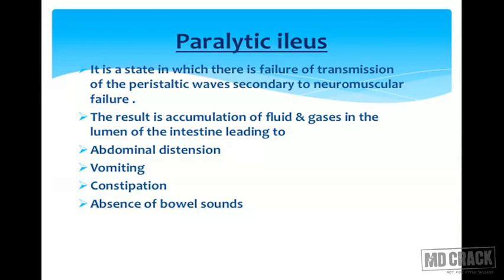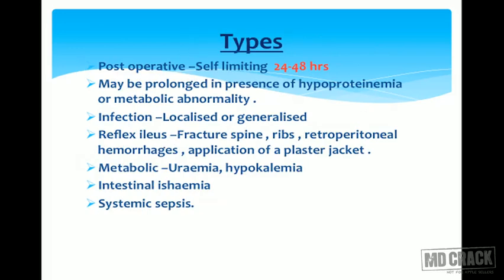Paralytic ileus is the state in which there is failure of transmission of peristaltic waves secondary to neuromuscular failure. The result is accumulation of fluid and gas in the lumen of the intestine, leading to abdominal distension, vomiting, constipation, and absence of bowel sounds. Types include post-operative, which can be self-limiting from 24 to 48 hours, or prolonged in the presence of hypoproteinemia or metabolic abnormality.